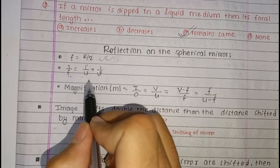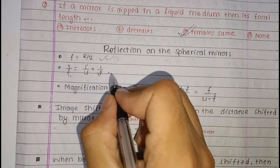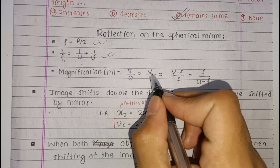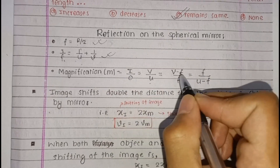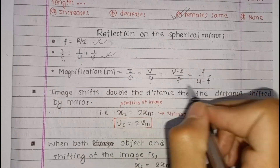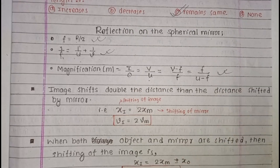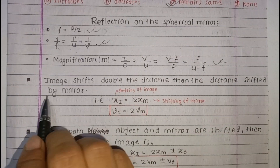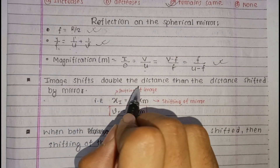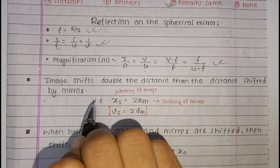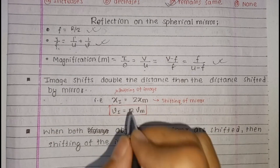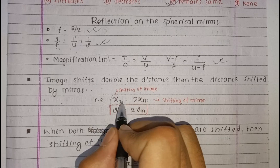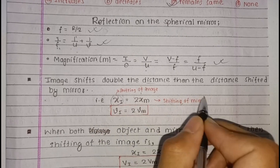The mirror formula is 1 by f equals 1 by v plus 1 by u. Magnification is image distance by object distance. If the image shifts double the distance, then the distance is shifted by the mirror.